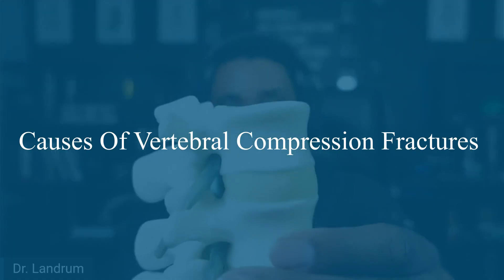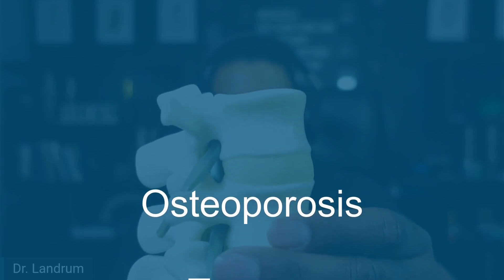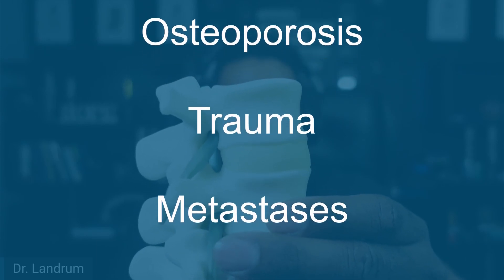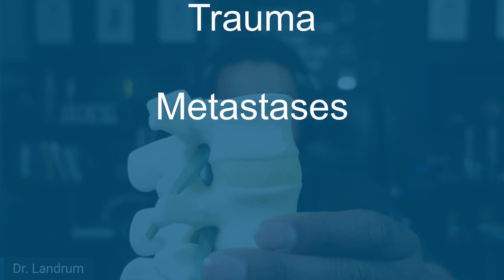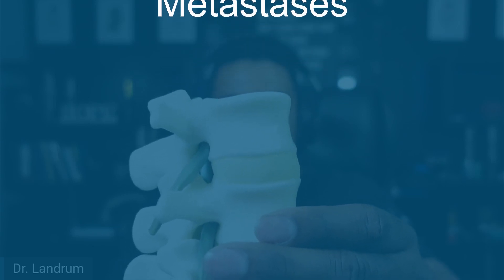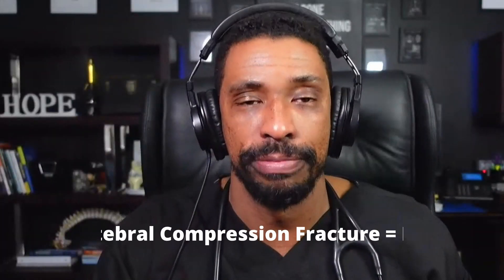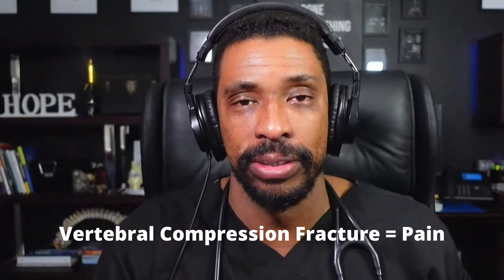Some causes include osteoporosis, which results in the bone having a fracture because of weakness. Sometimes it can occur from trauma. Sometimes it can occur because there are metastases from cancer that come to the bone and cause problems. But at the end of the day, that compression of the vertebral body can result in pain that is traditionally axial in nature.